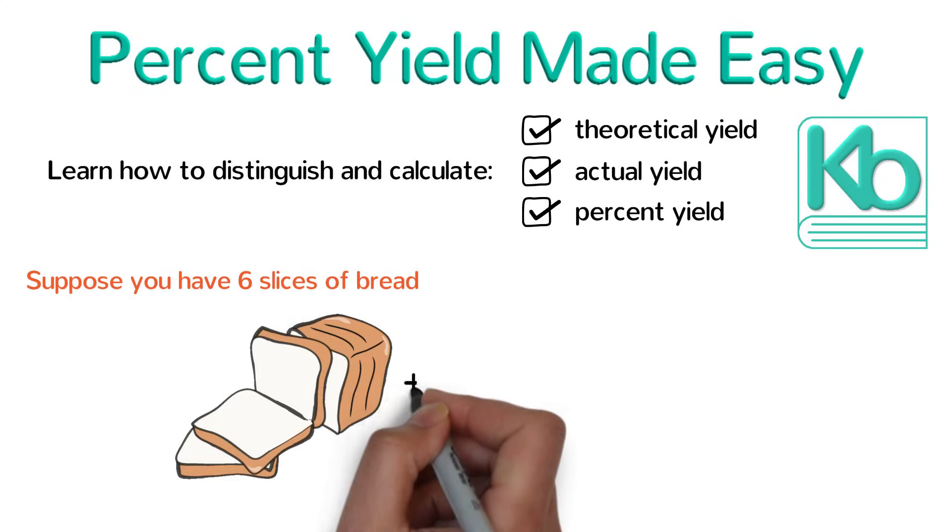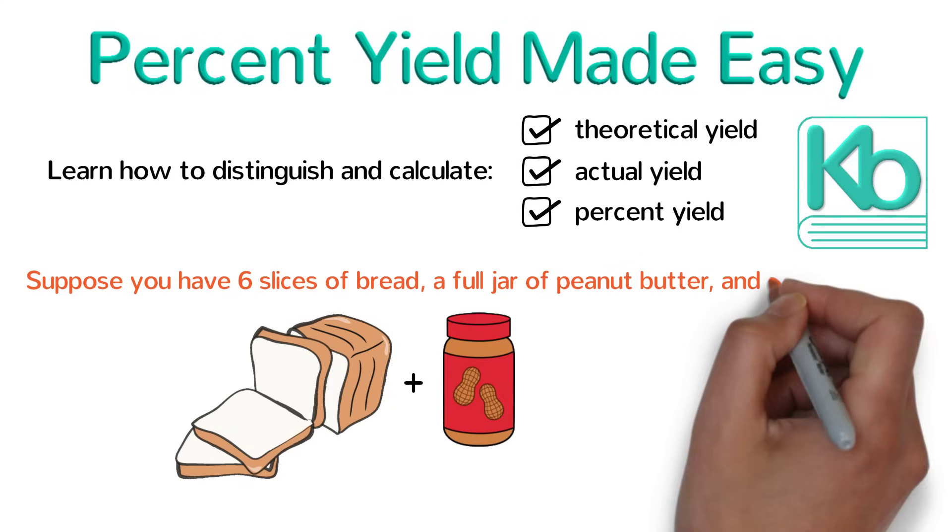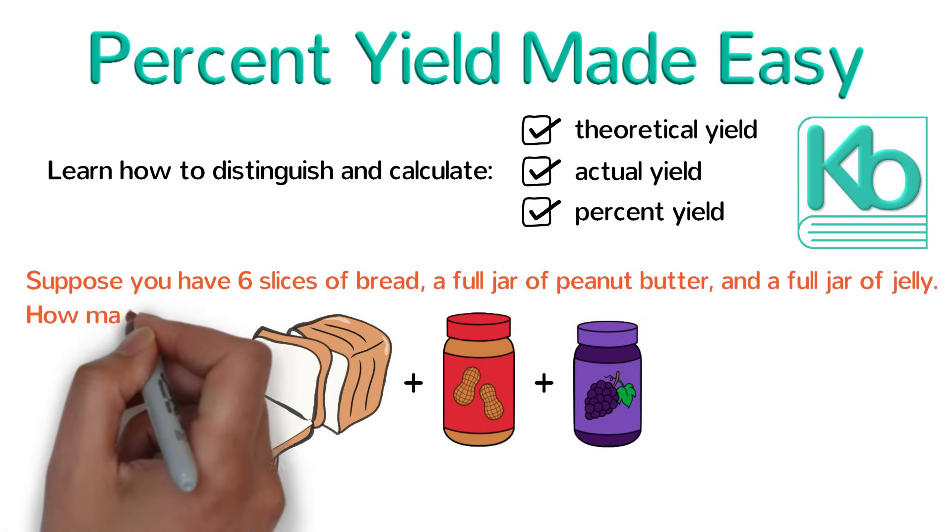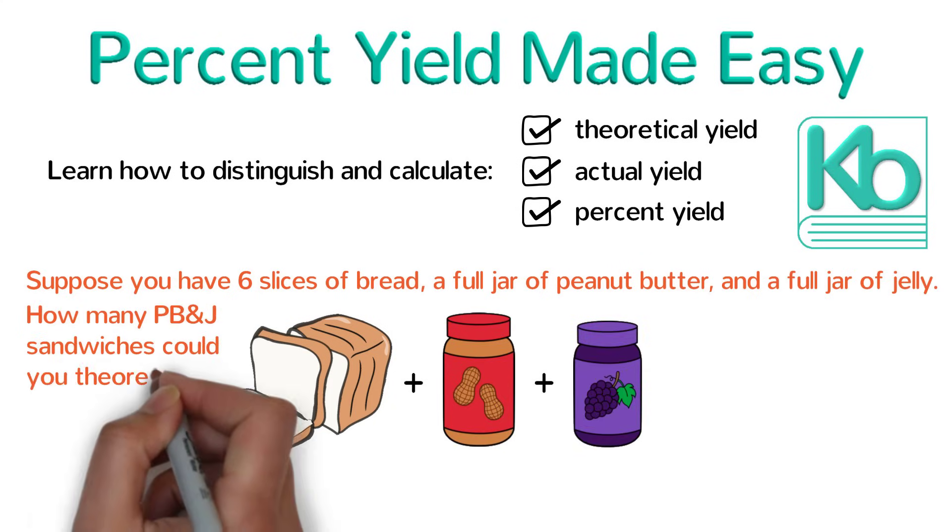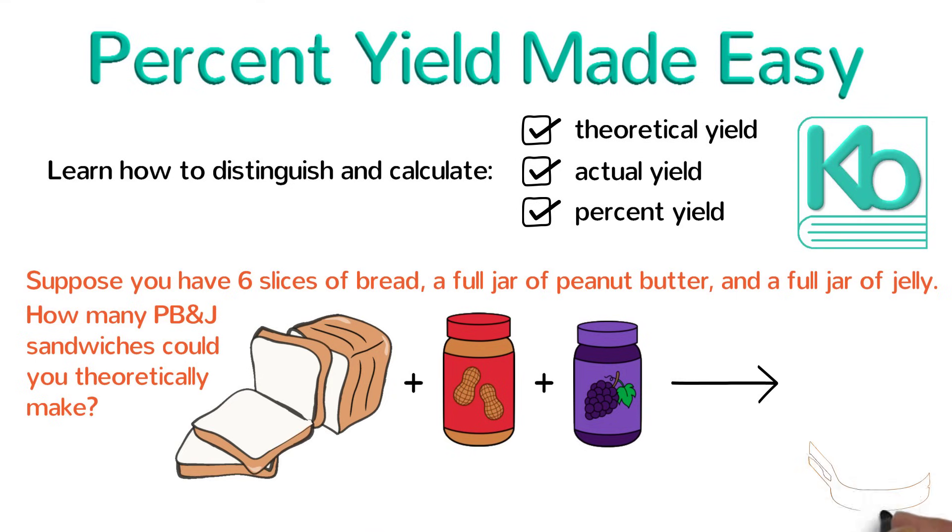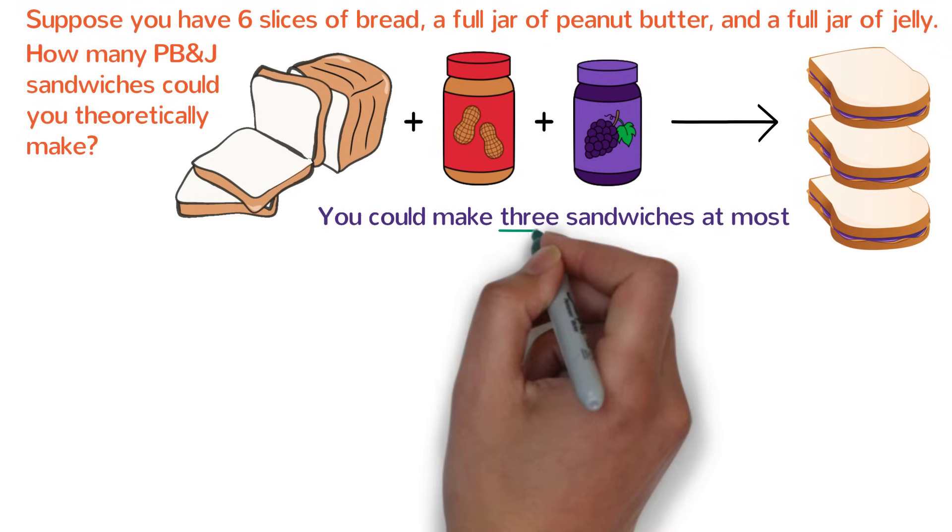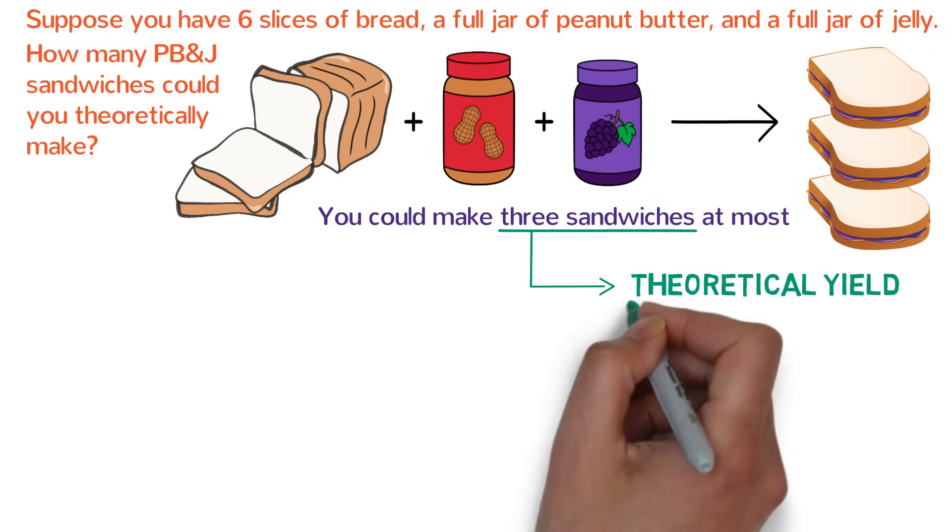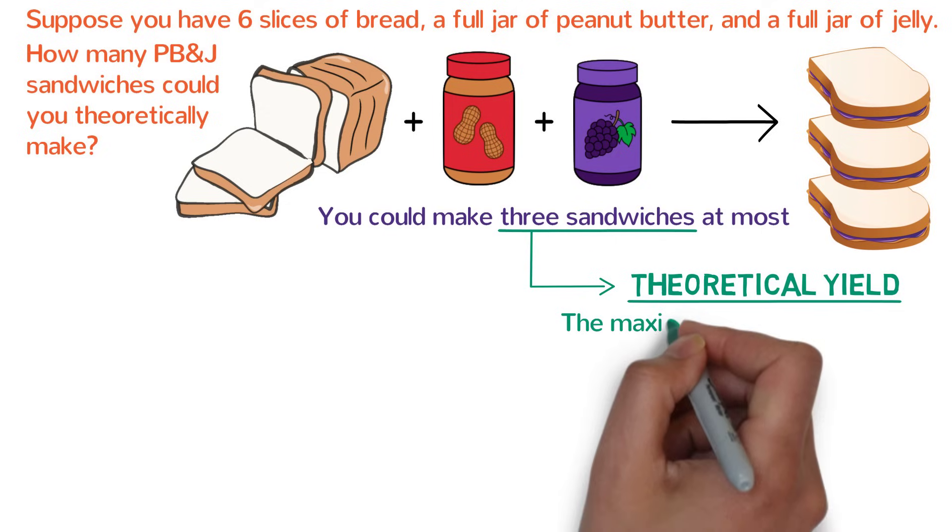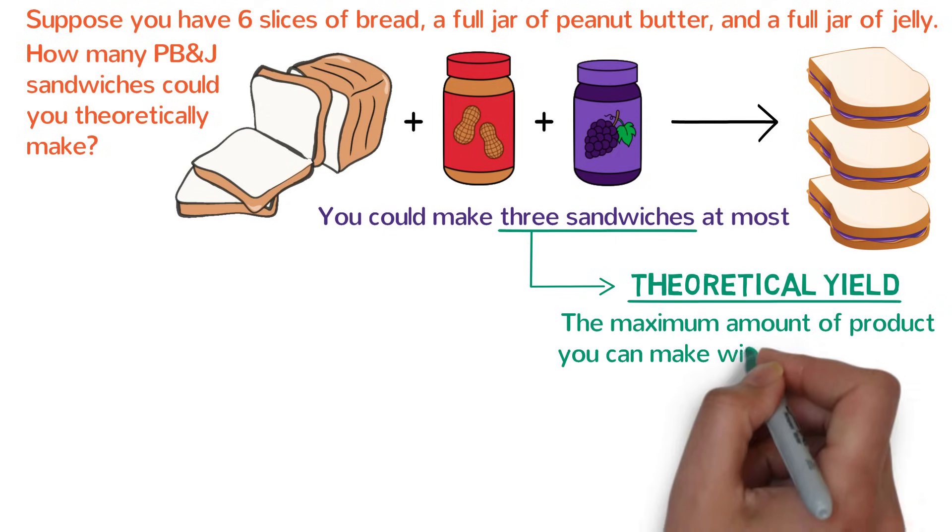Suppose that you have six slices of bread, a full jar of peanut butter, and a full jar of jelly. How many peanut butter and jelly sandwiches could you theoretically make? Because each sandwich uses two slices of bread, you could make three sandwiches at most. That is what we call the theoretical yield in chemistry. It is the maximum amount of product you can make with what you have.